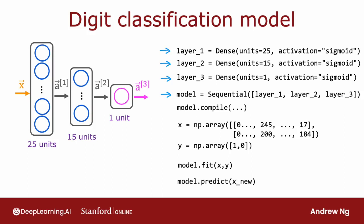And same as before, you can then store the data in a matrix and run the compile function and fit the model as follows. Again, more on this next week. And finally, to do inference or to make predictions, you can use model.predict on x_new.